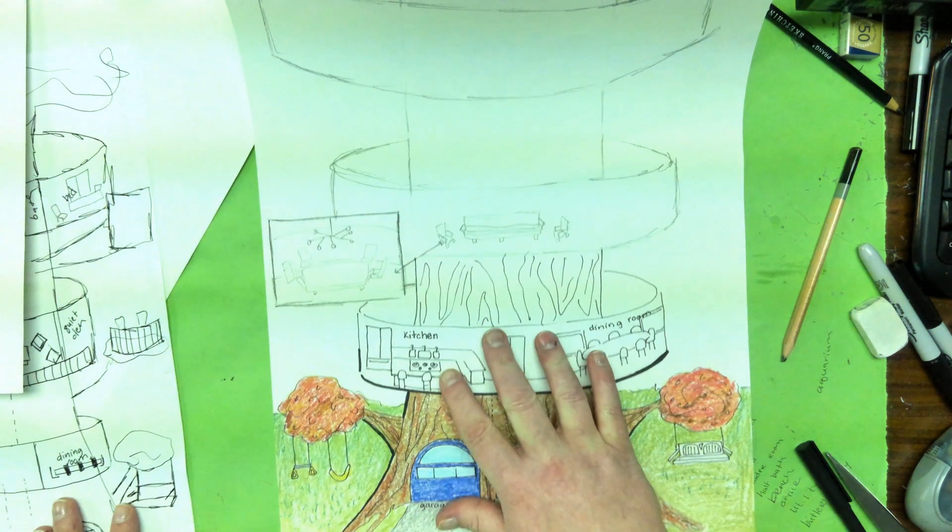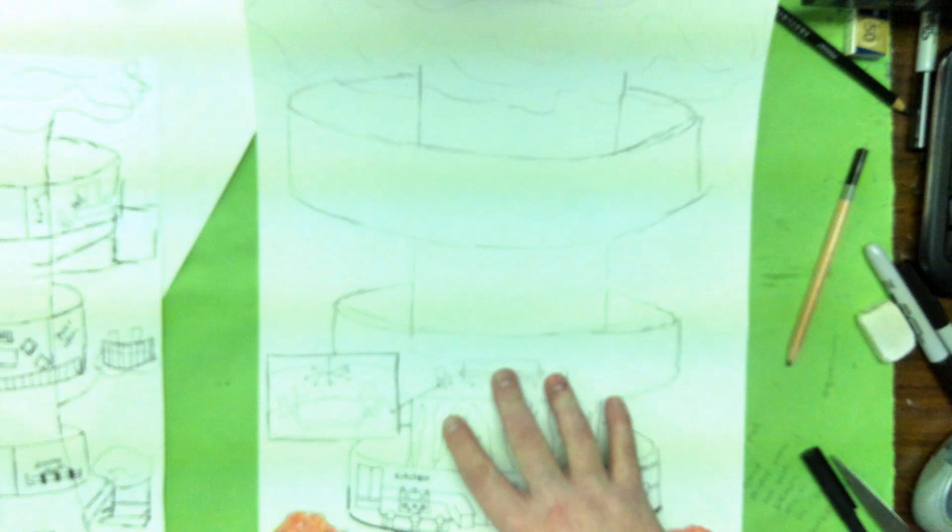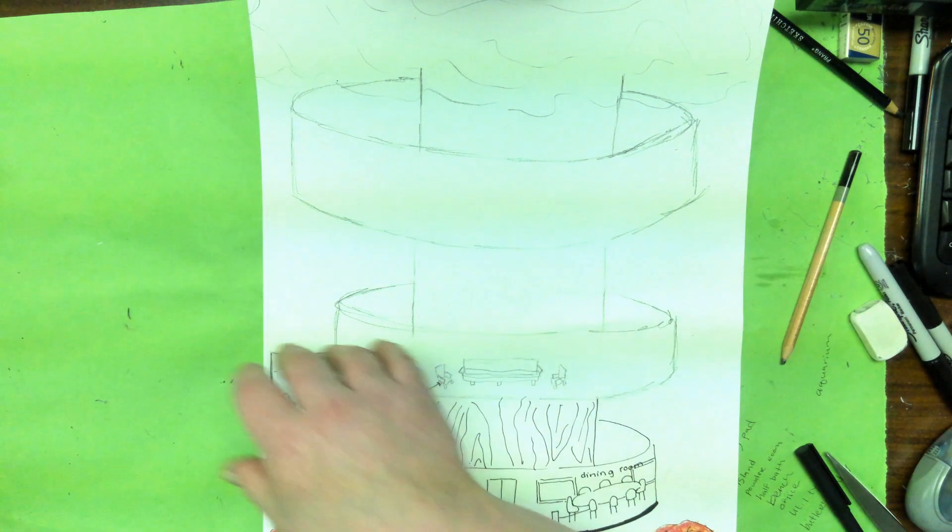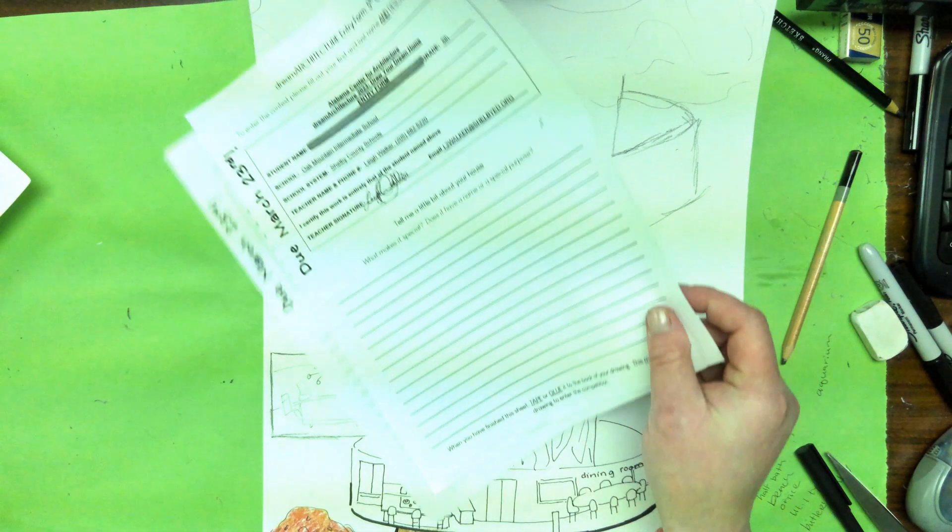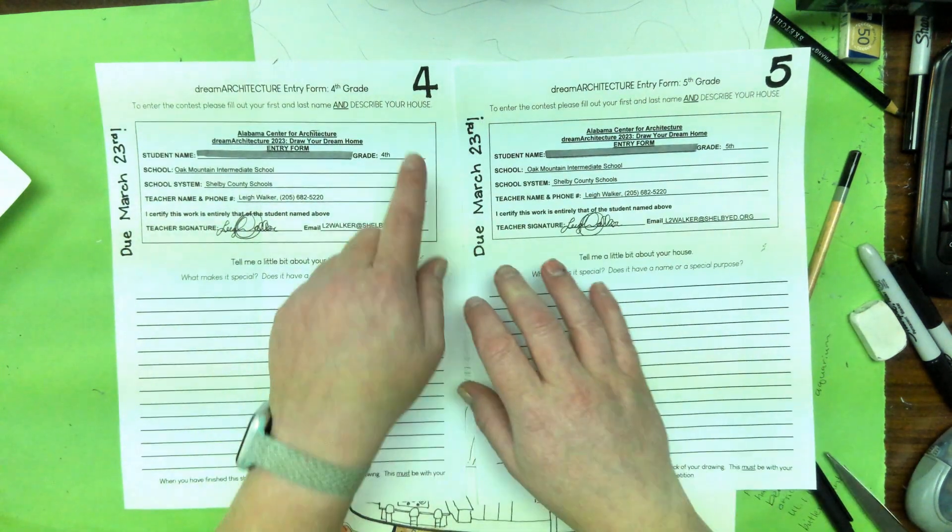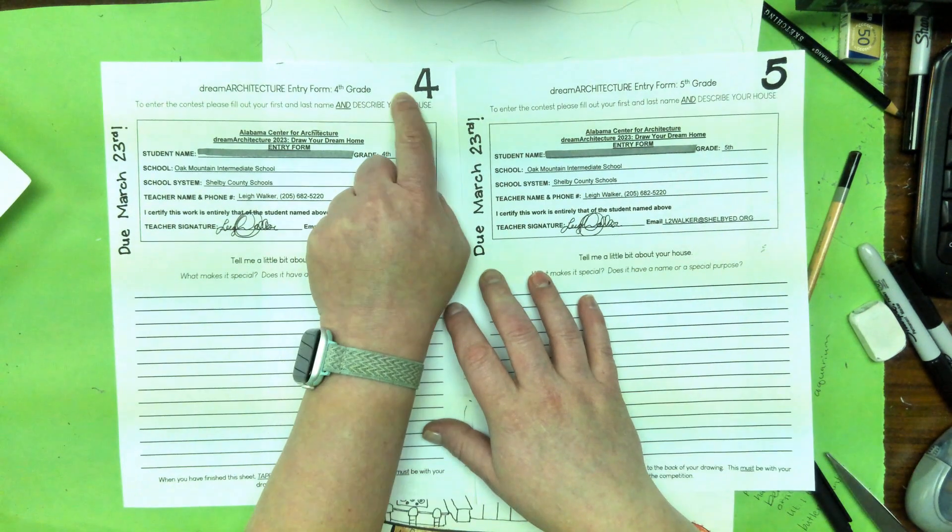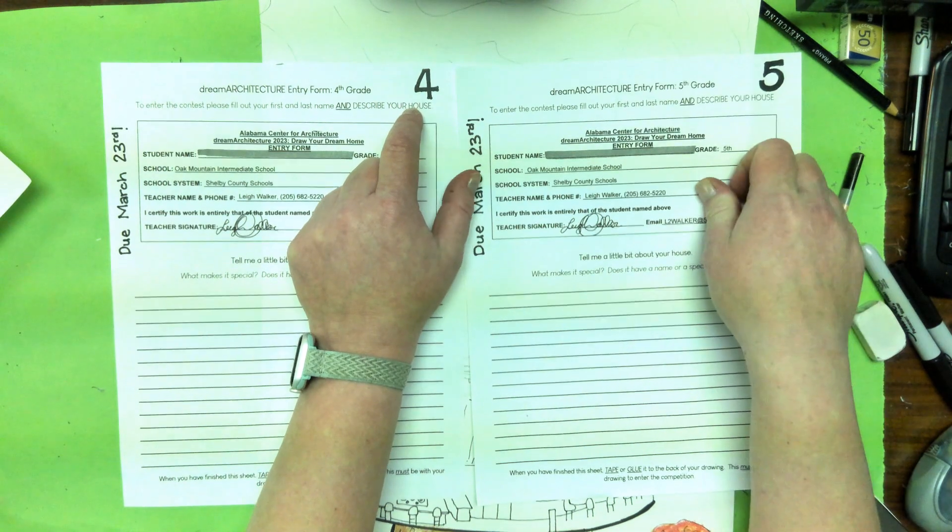And then you will bring it back by March 23rd. And you will also have a little entry sheet that you're going to pick up from the back. So if you're in 4th grade, you'll get the entry sheet that says 4. If you're in 5th grade, you'll get the entry sheet that says 5th.